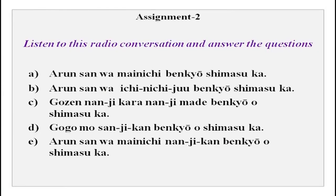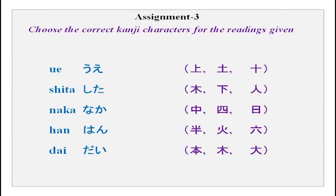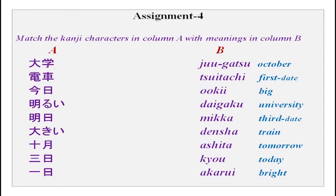Then we have a small radio conversation assignment. Listen to the radio conversation: Arun-san, mainichi nanjikan benkyou shimasu ka? Sou desu ne, asa roku ji kara ku ji made desu. Ban wa benkyou shimasen ka? Ie, go ji kara hachi ji made shimasu. Sou desu ka, jaa mainichi roku jikan benkyou shimasu ne. Sou desu. Listen to the conversation and answer the questions given. There is also another assignment: kanji characters are given and you have to choose the correct reading. Match the kanji characters in column A with readings in column B.